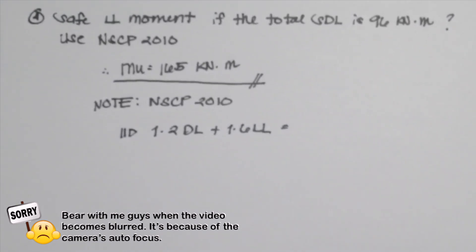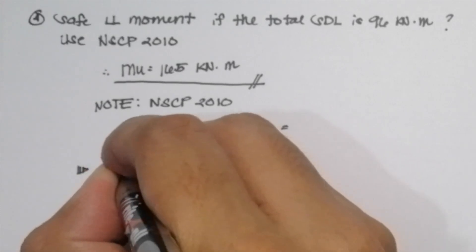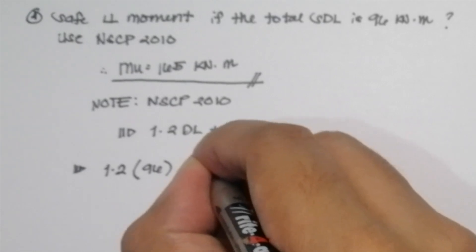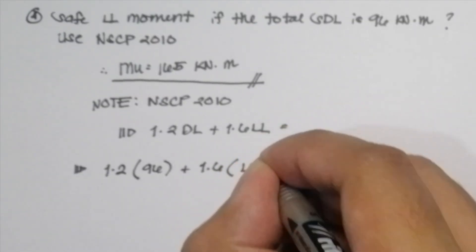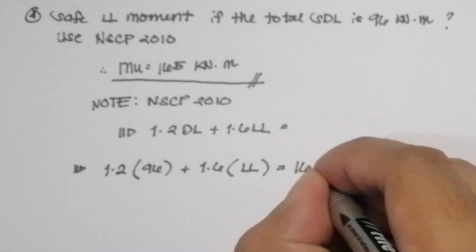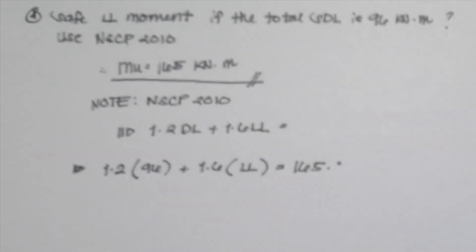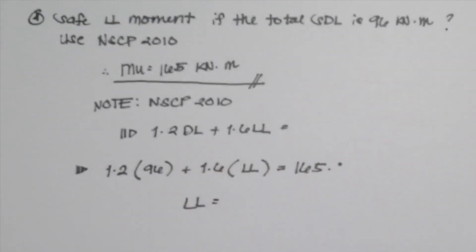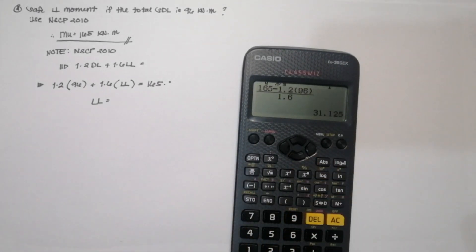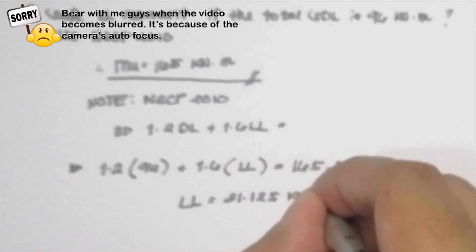So let's input our values 1.2 multiplied by the service dead load 96 plus 1.6 multiplied by our unknown, the live load. And we can equate it to our factored or our ultimate moment capacity. So in this problem, I did not include the effects of the self-weight of the beam because the answer it generated is not in the choices. So by solving our live load, our safe live load moment is equal to 31.125 kilonewton meter. And that is the answer for the fourth question.